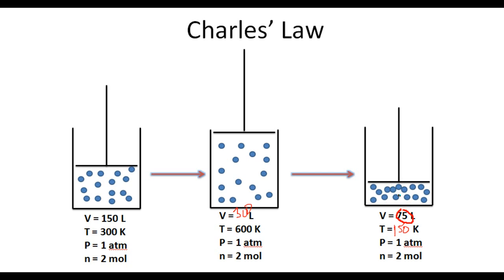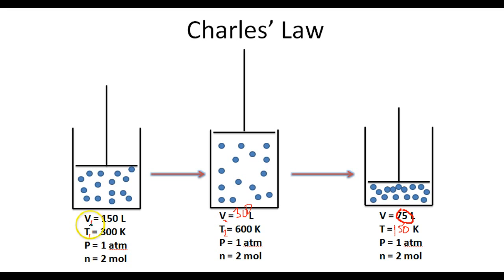Charles' Law states that if you hold the pressure of a gas constant, then the volume and temperature of that gas will be directly proportional. Let's suppose this is the starting volume and this is the starting temperature, and these are the final volume and final temperature. The initial volume divided by the temperature gives us one-half: 150 divided by 300 is one-half. The final volume is 300 and the final temperature is 600. 300 divided by 600 is also one-half. So Charles' Law tells us that the initial volume divided by the initial temperature will always equal the final volume divided by the final temperature.